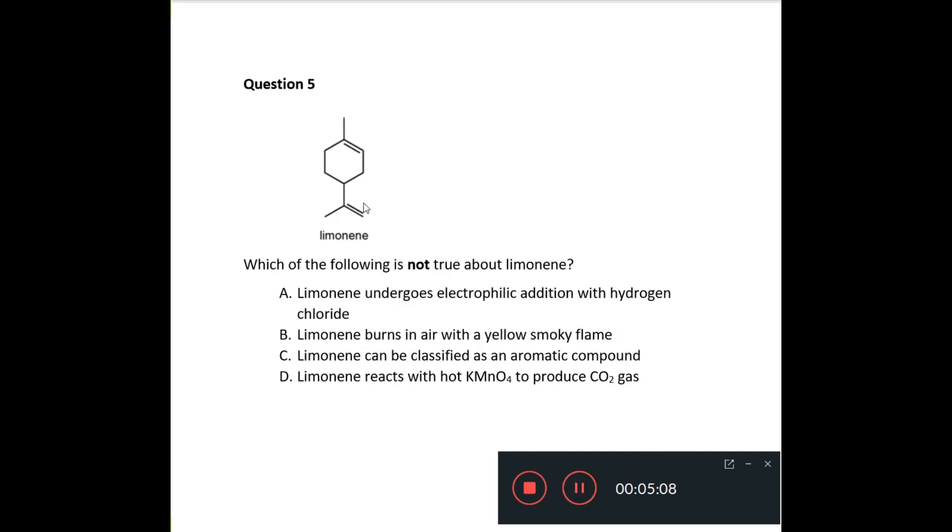Question five. Now question five also concerns limonene. It says, which of the following is not true? Not true about limonene. So let's look at it. A says limonene undergoes electrophilic addition with hydrogen chloride. Well, is that true? Yes. Well, it has an alkene group right there. And alkenes do undergo electrophilic addition with hydrogen chloride. B says limonene burns in air with a yellow smoky flame. And we know that alkenes will do that. It has two alkene groups.